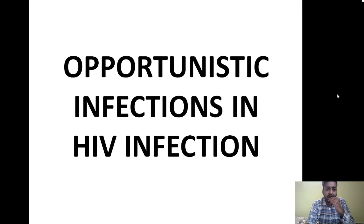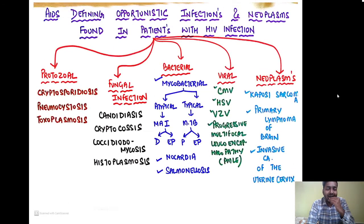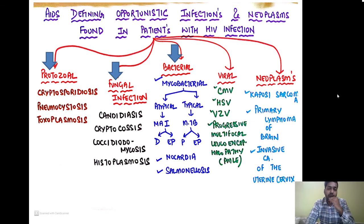Now, what are the opportunistic infections in HIV? The AIDS-defining opportunistic infections and neoplasms include: protozoal infections — cryptosporidiosis, pneumocystosis, toxoplasmosis; fungal infections — candidiasis, cryptococcosis, coccidioidomycosis, and histoplasmosis; bacterial infections — mycobacterial, which can be atypical such as Mycobacterium avium intracellulare causing disseminated or extrapulmonary disease, or typical Mycobacterium tuberculosis causing pulmonary or extrapulmonary disease. There can also be nocardiosis and salmonellosis.